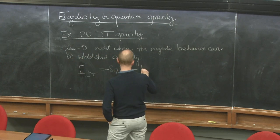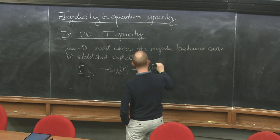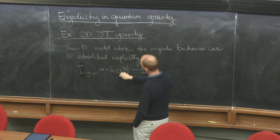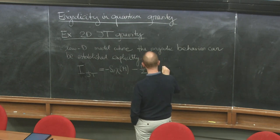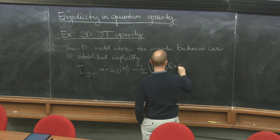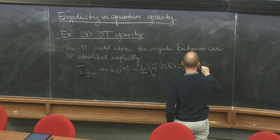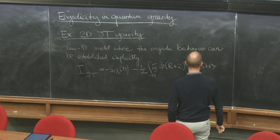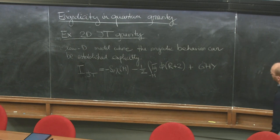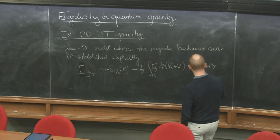You have an integral over two-dimensional metrics and two-dimensional manifolds, and instead of writing down the naive Einstein-Hilbert term — which gave the Euler density — we introduced this field phi, the dilaton, which multiplies R plus 2. Then you have a bunch of boundary terms, for example the Gibbons-Hawking-York boundary term and holographic renormalization terms. Those boundary terms are important when you talk about boundary conditions.